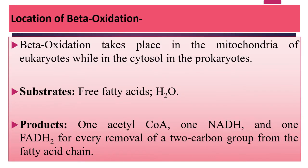Beta oxidation takes place in the mitochondria of eukaryotes, while in the cytosol in prokaryotes. The substrate is free fatty acid and water, and the products obtained are acetyl-CoA, NADH, and FADH2 for every removal of a 2-carbon group from the fatty acid chain.